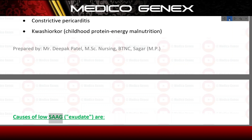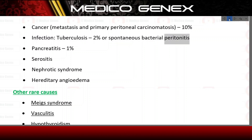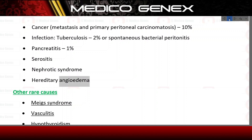Causes of low SAAG, exudate, are: cancer — metastasis and primary peritoneal carcinomatosis — 10%; infection — tuberculosis 2% or spontaneous bacterial peritonitis; pancreatitis 1%; nephrotic syndrome; hereditary angioedema. Other rare causes include Meigs' syndrome.